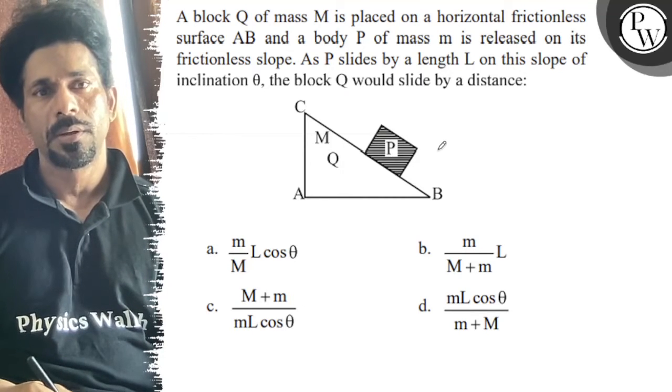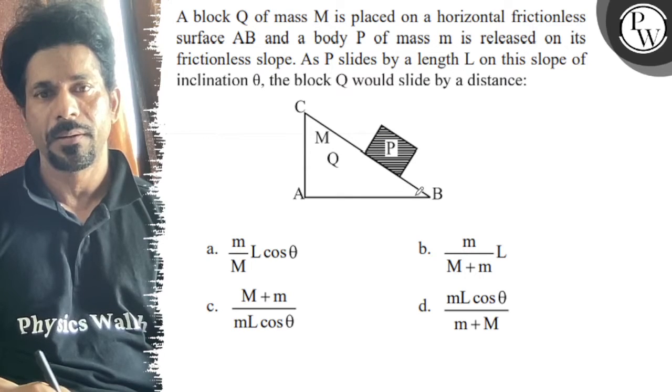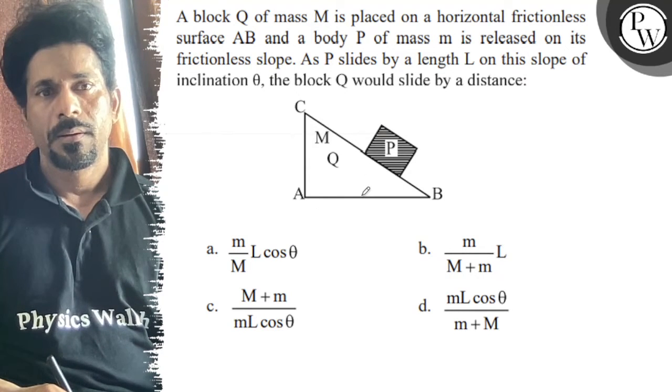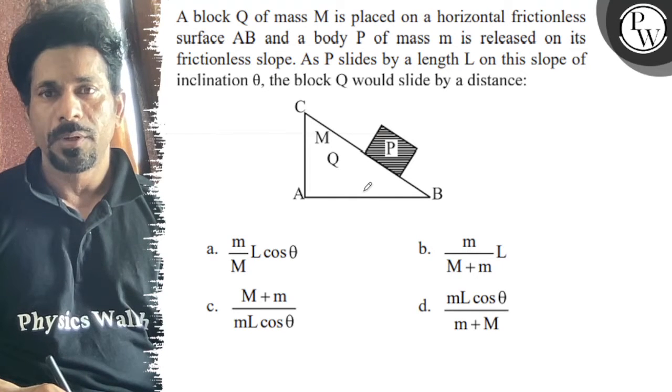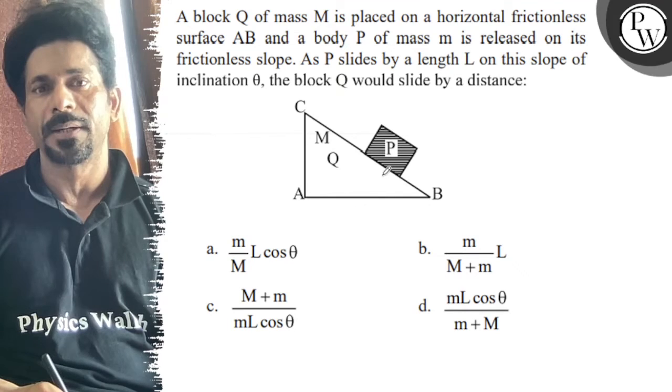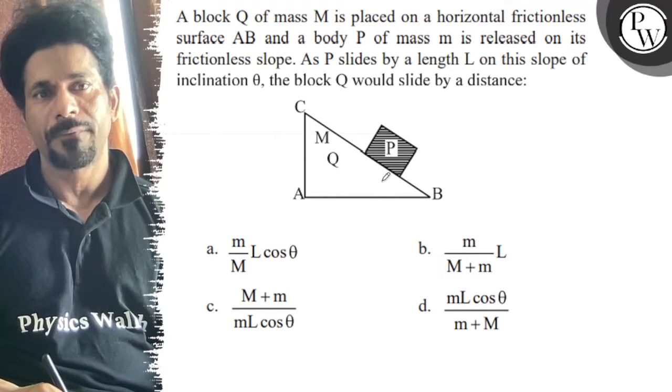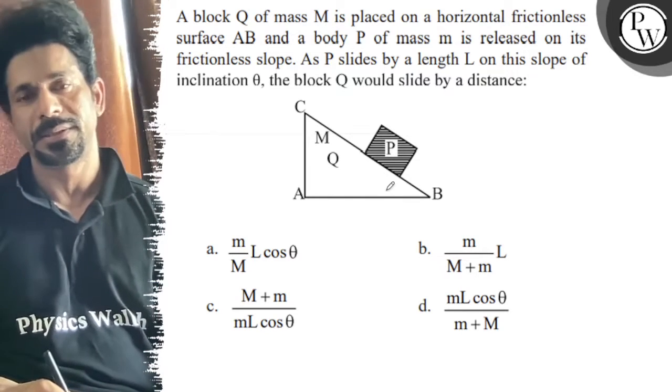Hello, let's see the question. A block Q of mass capital M is placed on a horizontal frictionless surface AB, and a body P of mass small m is released on its frictionless slope. As P slides by length capital L on this slope of inclination theta, the block Q would slide by a distance...